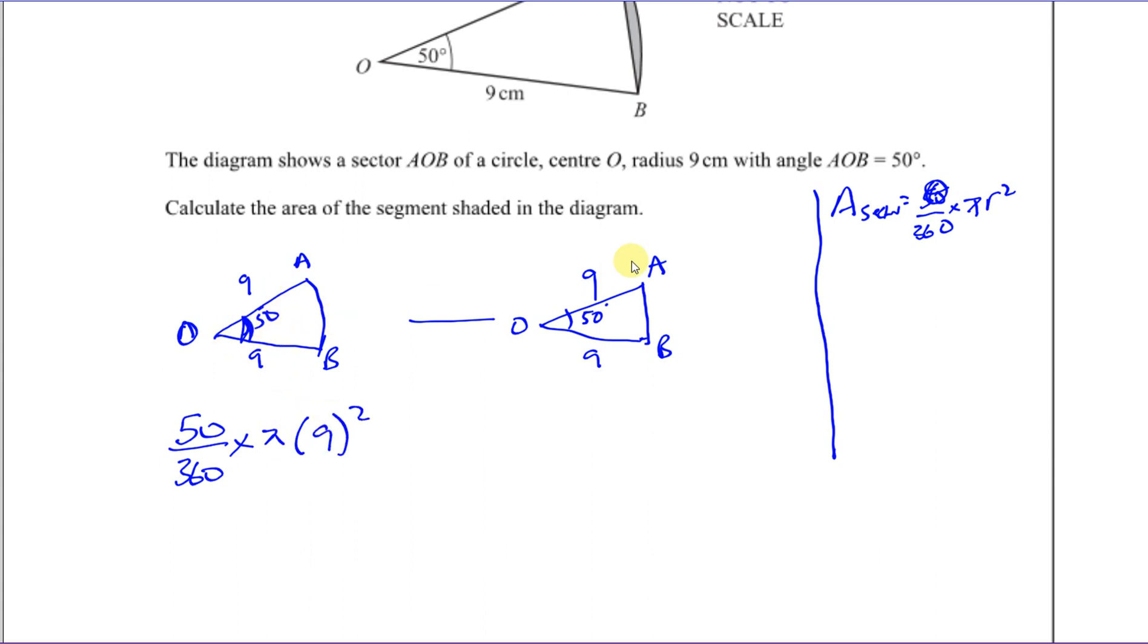Let me just write this here a bit neater. The area of a sector is going to be the angle over 360 times π times R². Whatever angle is here, that's the angle that goes up there. You're going to take away from that the area of this triangle.